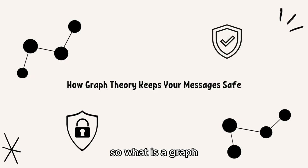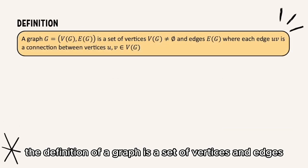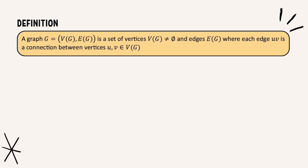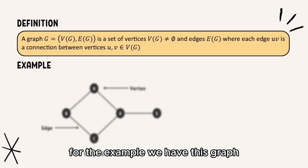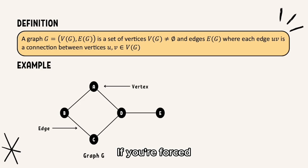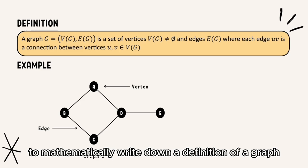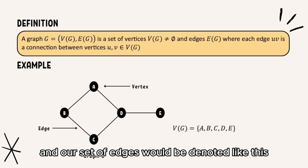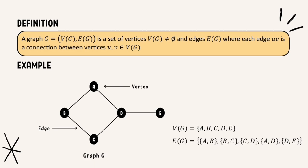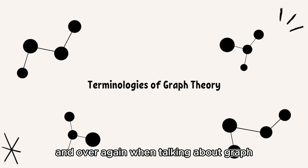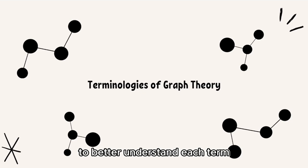So, what is a graph? The definition of a graph is a set of vertices and edges, where each edge is a connection between vertices. For example, we have this graph — it is called graph J. It has vertices and edges. If you want to mathematically write down a definition of a graph, we can use set notations. For graph J, the vertex set looks like this, and our set of edges would be denoted like this. Let's see the definition of some important terminology that you'll see over and over again when talking about graphs. Feel free to pause the video to better understand each term.